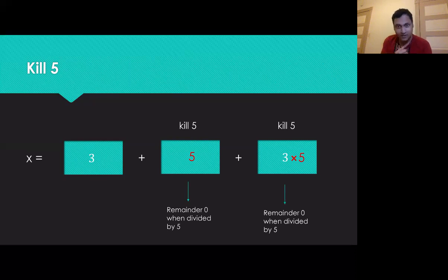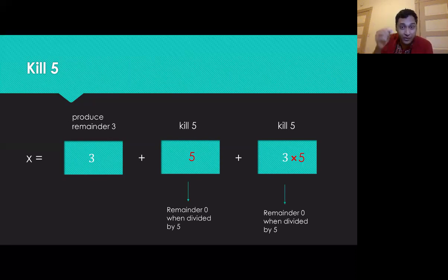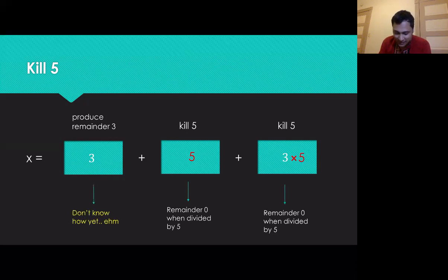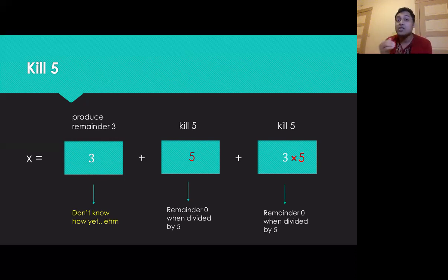In general, this might not happen — we just got lucky here. Five already produces remainder two when divided by three, so the second box still satisfies the three-condition. When dividing by five, the second and third boxes already kill five. We want the first box to produce remainder three when divided by five, and it does — but again, that's just luck. Sun Tzu's specific numbers happened to work out nicely.